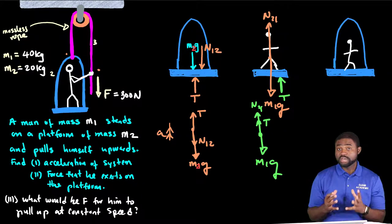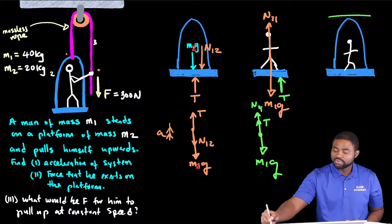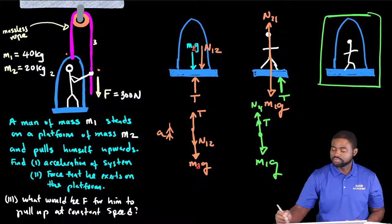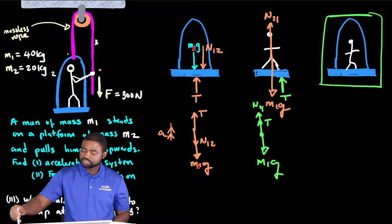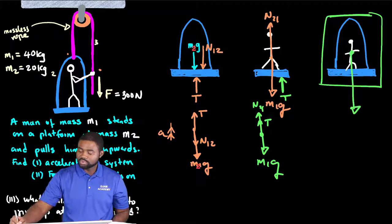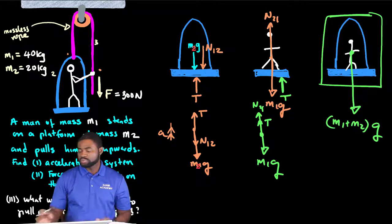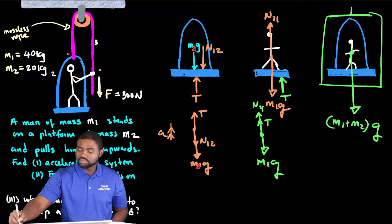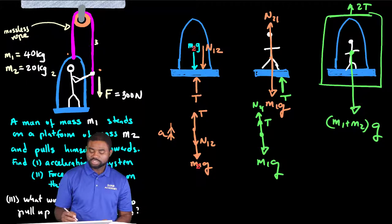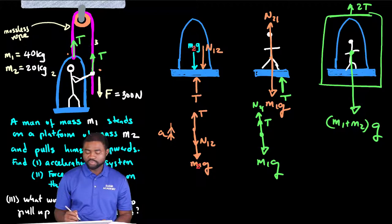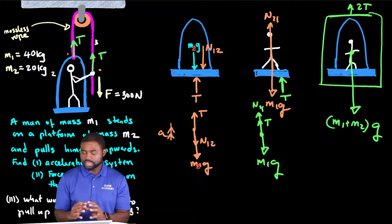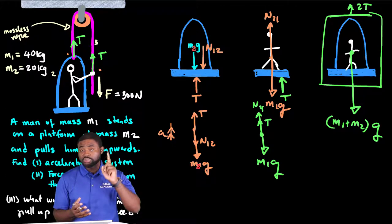If we consider the guy and the platform as a combined system, the weight of the system acts downwards — this is M1 plus M2 times G. The upward force acting on the system will be 2T. He asserts a downward force F on the rope; by Newton's third law, the string asserts an upward force on him, and also an upward force on the platform. So with both together, there are two tension forces pointing upwards.